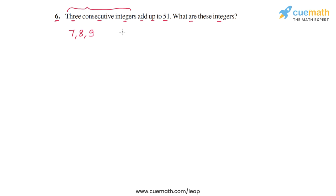So these are three consecutive integers. Or take 13, 14, 15. These are also three consecutive integers.